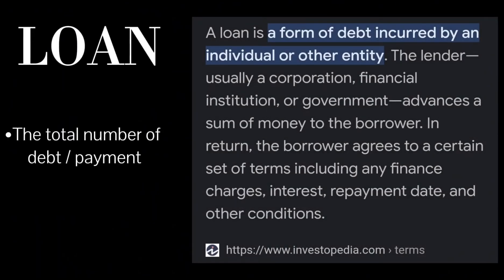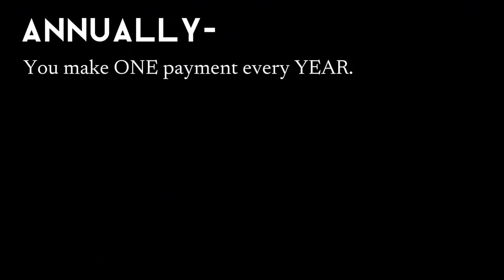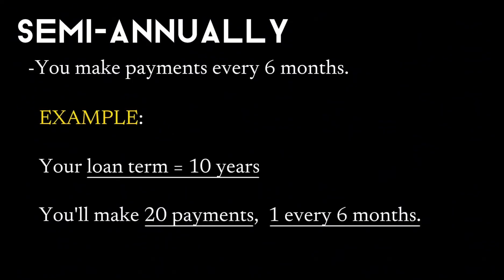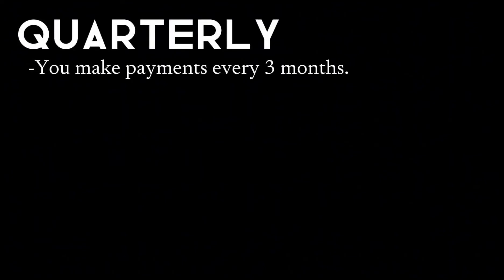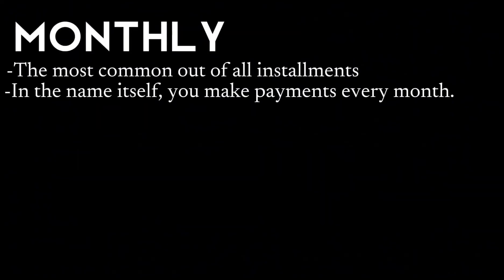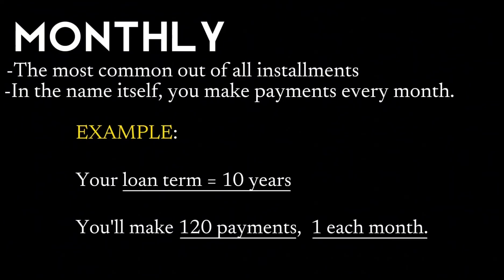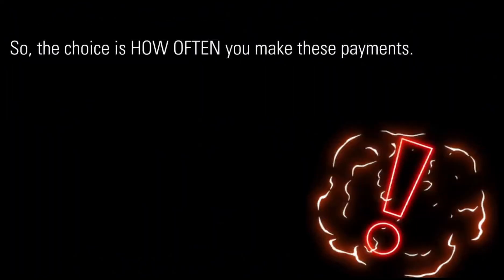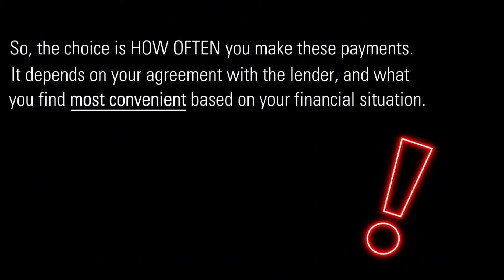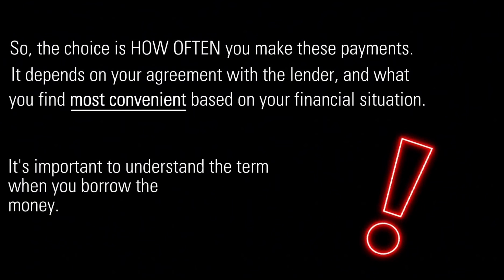Because you pay them in regular intervals like monthly or annually, the term of the loan is the total number of payments — how long it will take you to pay back the entire loan. Annually means one payment every year, so a 10-year loan means 10 payments. Semi-annually means payments every six months, so a 10-year loan means 20 payments. Quarterly means payments every three months, giving 40 payments over 10 years. Monthly is the most common — you make a payment every month, so a 10-year loan means 120 payments. The choice depends on your agreement with the lender and your financial situation.